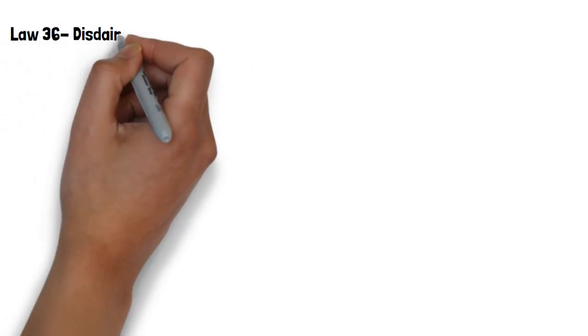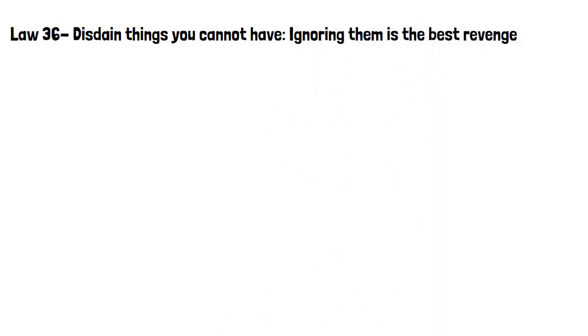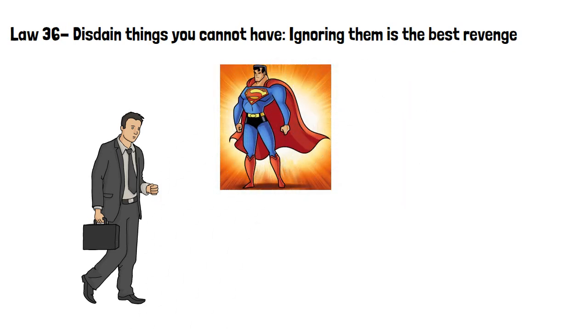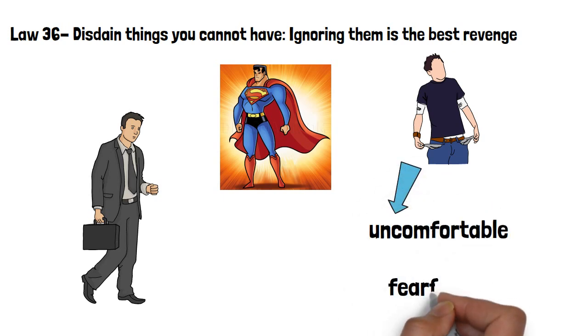Law 36, disdain things you cannot have. Ignoring them is the best revenge. The less interest you take in things that annoy you, the more superior you seem. By acknowledging your rival, you give their existence credibility, and therefore power. The more you want something, the more it leaves you, as your interest is too strong, which makes others feel uncomfortable and fearful. By turning your back on what you want, you'll drive your opponents crazy.